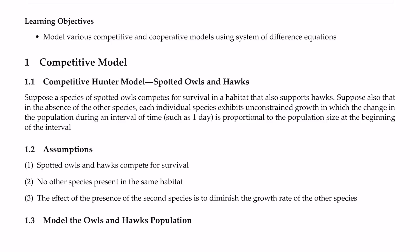Suppose a species of spotted owls compete for survival in a habitat that also supports hawks. Suppose also that in the absence of the other species, each individual species exhibits unconstrained growth — that is, exponential growth. You can let the population grow to infinity indefinitely, where the change in population during a time interval such as one day is proportional to the population size at the beginning of the interval. The difference equation is equal to k times the population at the given time.